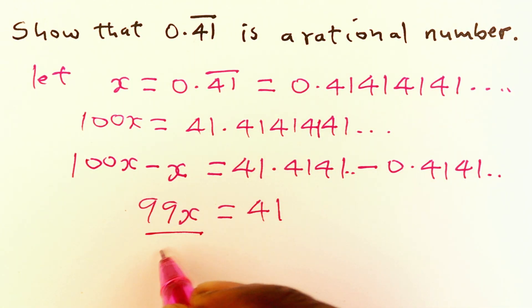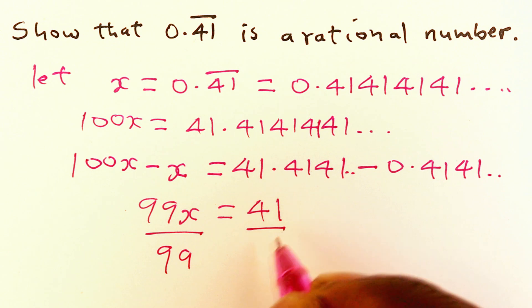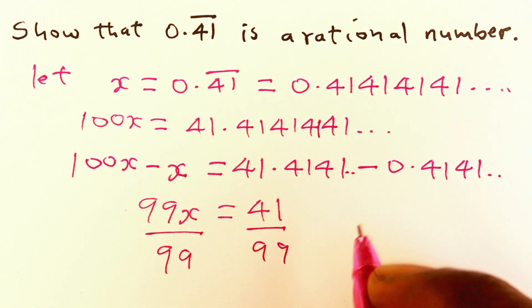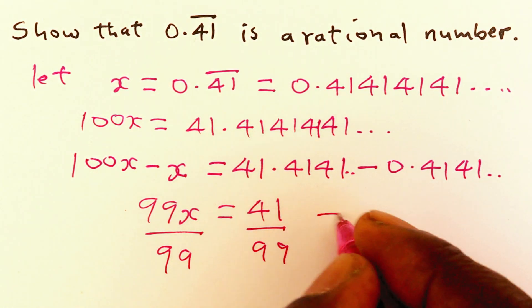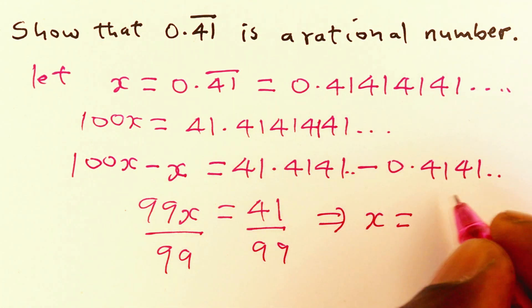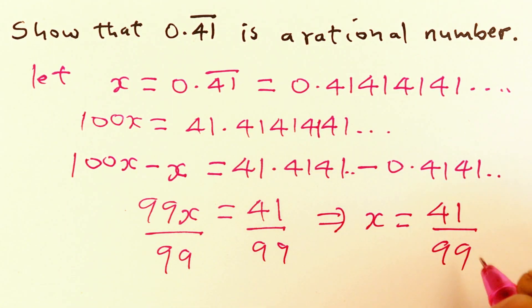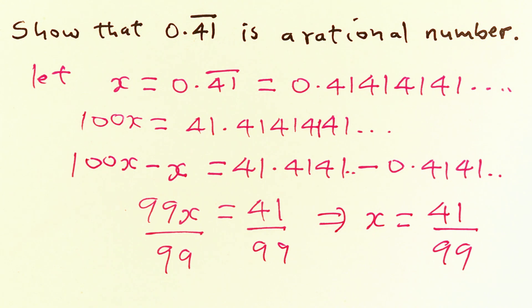Now we can get x alone by dividing both sides by 99. We're going to get that x is equal to 41 over 99, which is a rational number. And that was our x.